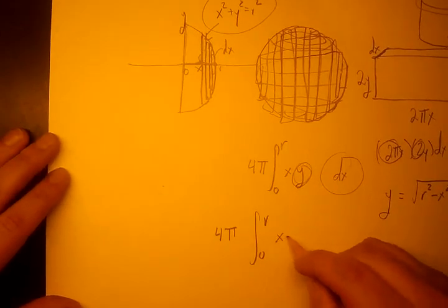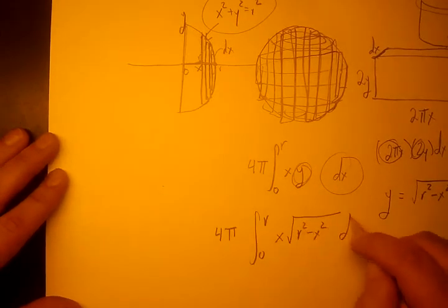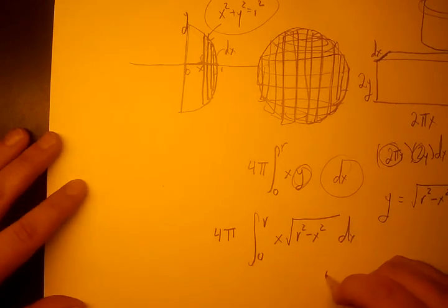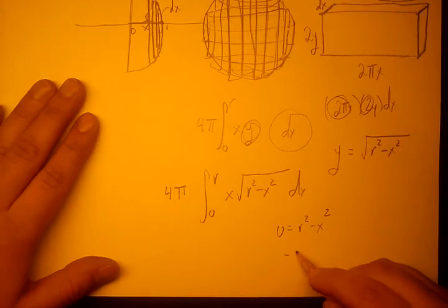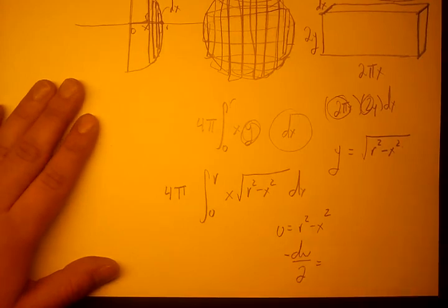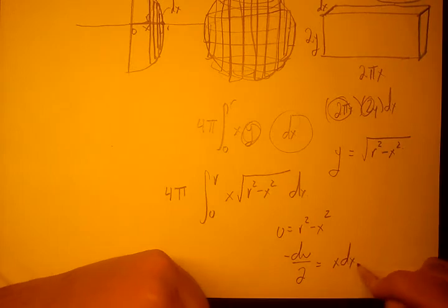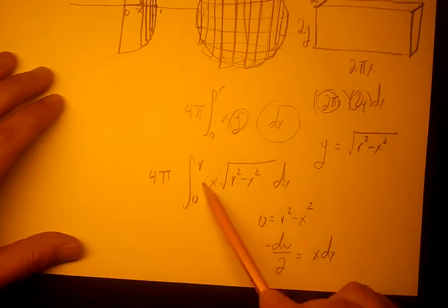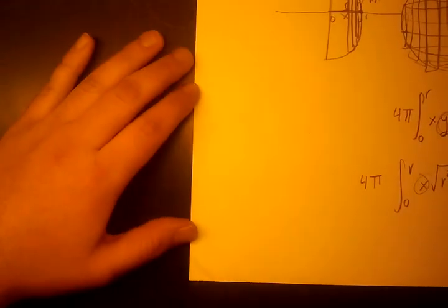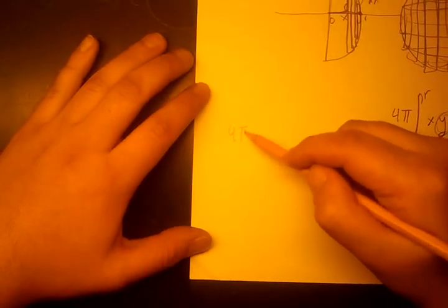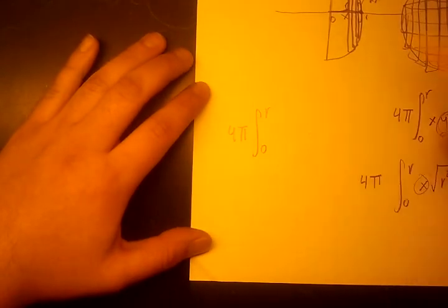So it's going to be x times radical of r squared minus x squared dx. Now we need to use u substitution. We're going to let u equal r squared minus x squared. So negative du over 2 equals x dx. And x dx is comprised of this x and this dx. So when we do this, it's going from 0 to r.